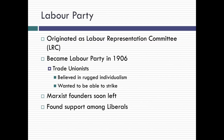The Labour Party originated as a committee — the LRC — and became the Labour Party in 1906, at the beginning of the period we're looking at. Largely made up of trade unionists, they believed in rugged individualism — that everybody had to be able to work to support themselves. They did believe in striking, because through their labour they should be able to earn a living, and when wages or hours were unsatisfactory, they should be able to strike to renegotiate terms with employers. The Marxist founders left the party, so Marxists weren't really part of it, and the Labour Party oftentimes allied itself with the Liberal Party.